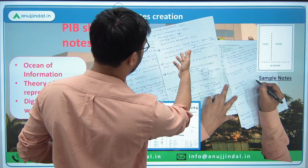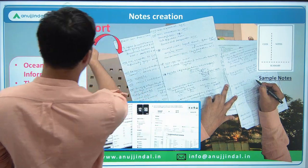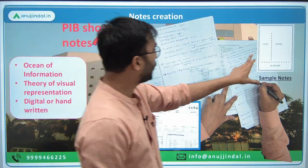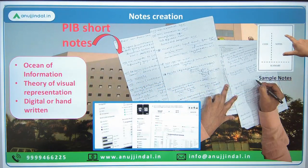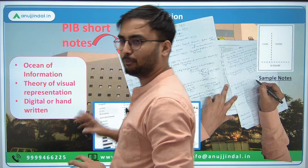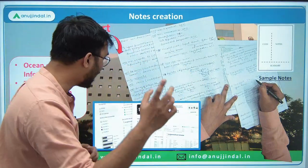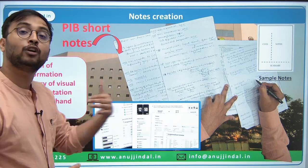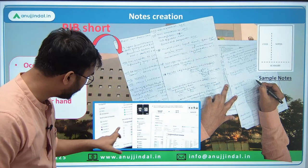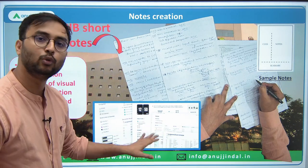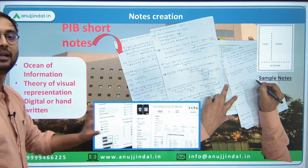For note-making, here are examples of PIB short notes made in an organized manner — with updates and short summaries. This is a good way of making sample notes by hand. If you are digitally advanced, you can make notes on Notion, Evernote, or OneNote — categorically and beautifully arranged in an organized way. Both handwritten and digital methods are effective.